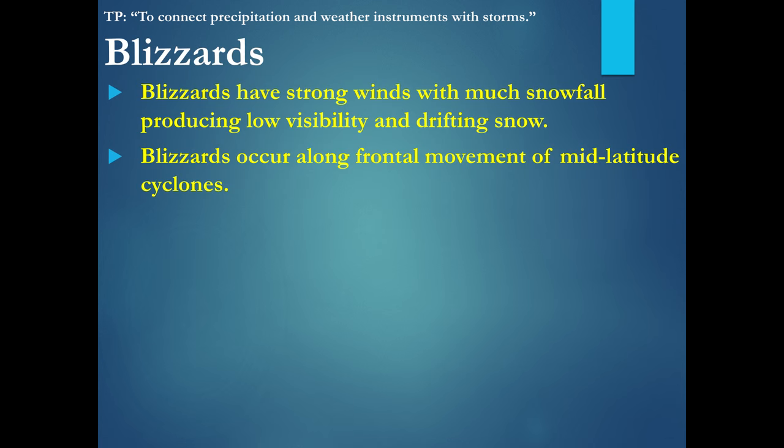Blizzards have strong winds and heavy snowfall, reducing visibility and making it very hard to drive. Blizzards occur along frontal movements of mid-latitude cyclones. Fronts occur where you have a difference in temperature — warm versus cold or cold versus warm. You have warm fronts, cold fronts, occluded, and stationary. Blizzards usually occur when you have a cold front.